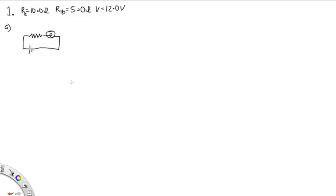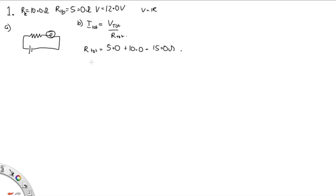Part B says calculate the voltage drop across and current through the resistor and light bulb. In a series circuit we have a constant current throughout the entire circuit. So the best way to approach this is to start by working out the current. Using V = IR, we have I equal to the total voltage over the total resistance. Because these are in series, the total resistance is just the sum of the two, which gives us a total current of 12 over 15, equal to 0.8 amps.